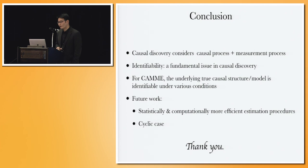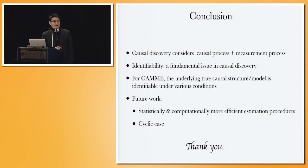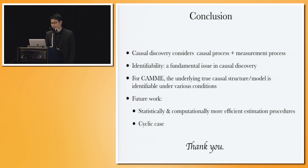To summarize: for successful causal discovery, we must consider not only the causal process but also the measurement process. Identifiability is a fundamental issue in causal discovery since we care about the underlying ground truth — we must show that with enough data, it is identifiable and can be estimated. For causal models with measurement error, the underlying causal structure and causal model together with the parameters could be identifiable under various conditions. In future work, we will develop statistically and computationally more efficient estimation procedures, and also consider the cyclic case — here we only considered acyclic graphs.